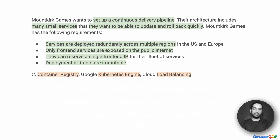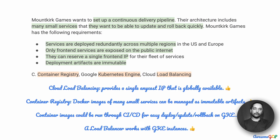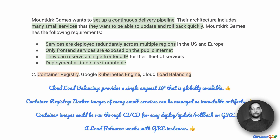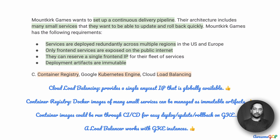Option C suggests using Container Registry, Google Kubernetes Engine, and Cloud Load Balancing. Cloud Load Balancing is very suitable because it provides a single anycast IP and becomes the single point where all users access the front-end. Container Registry is very useful because we can store container images — docker images — for each of the many small services. These images can be tagged and made immutable: once tagged, you don't change them, and you only update the tag version the next time you update something. Container Registry allows us to have multiple versions of these services as immutable artifacts, and these container images can be run through the CI-CD pipeline for deployment, update, and rollback.